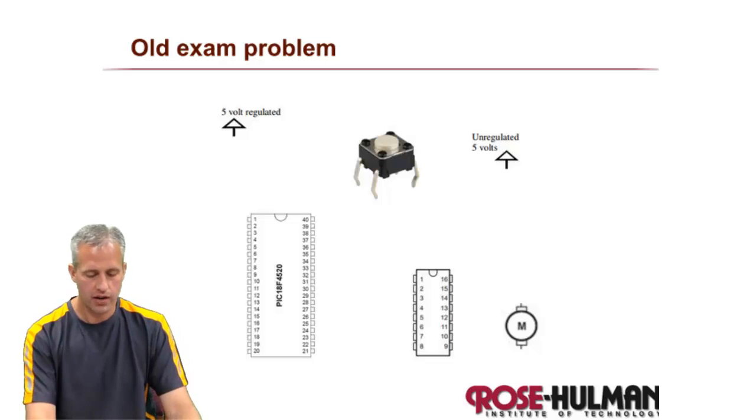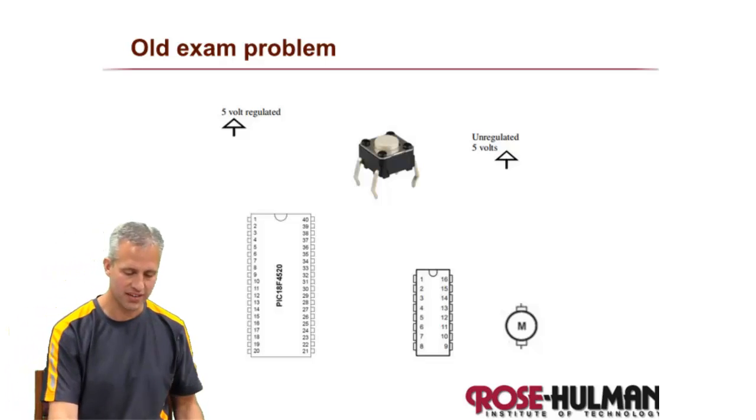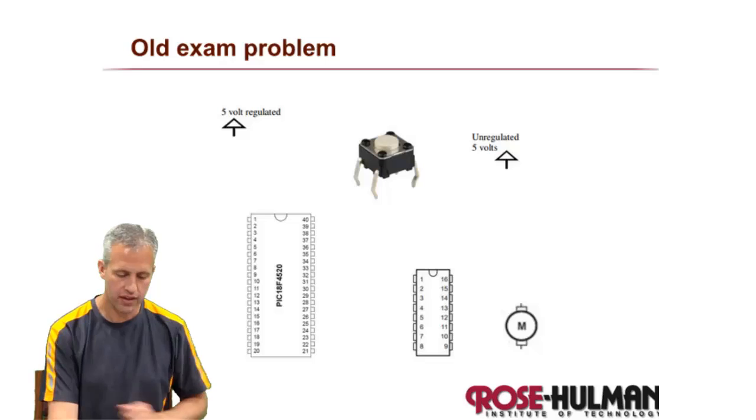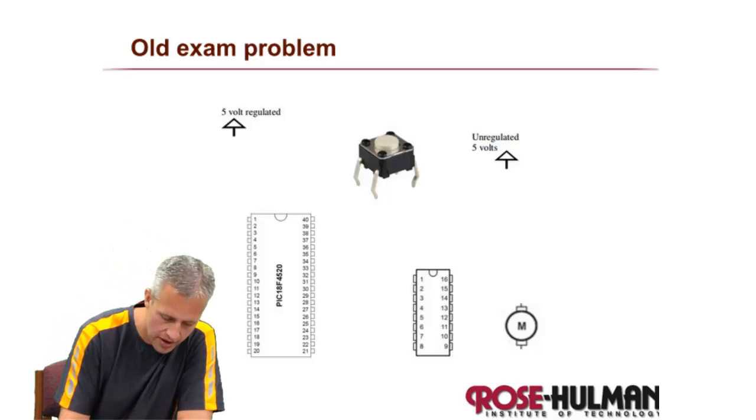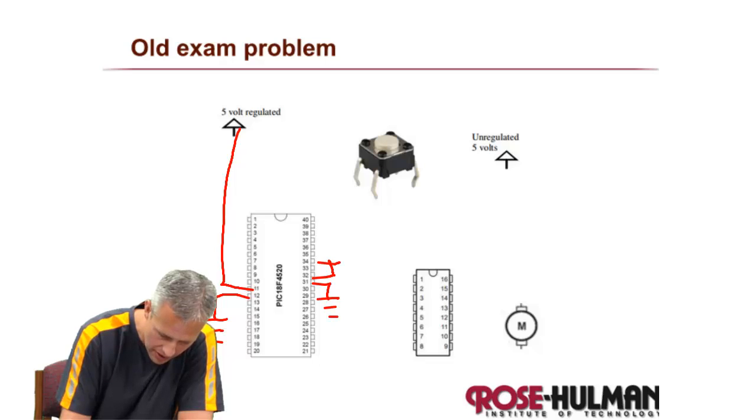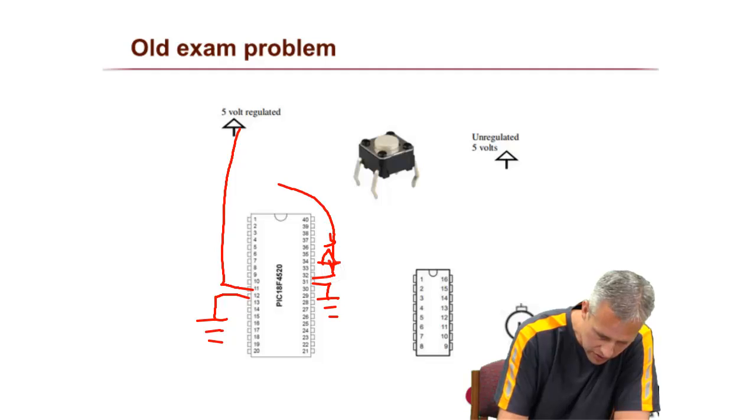I'll start with the PIC connections. I think it's 11 and 12 that are connected to power and ground over here. You can look at yours, I'm just working the problem. Then it's 31 and 32 I believe on this side. I guess I should use the regulator there.